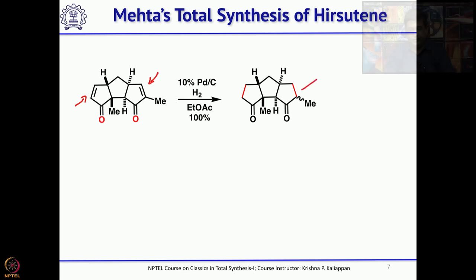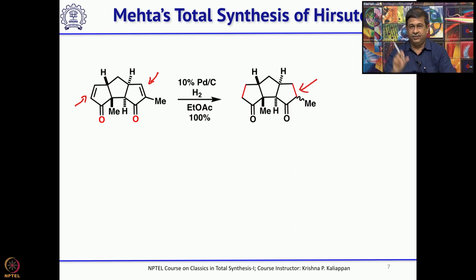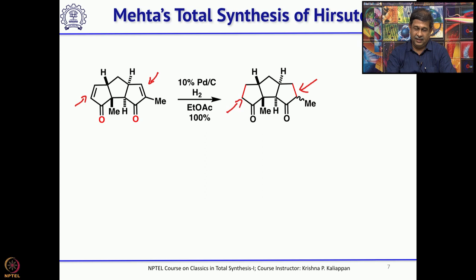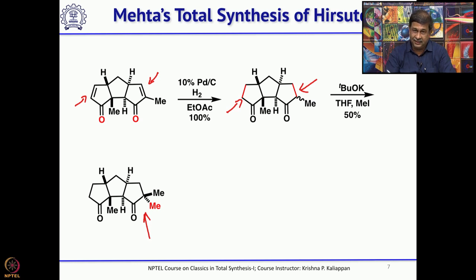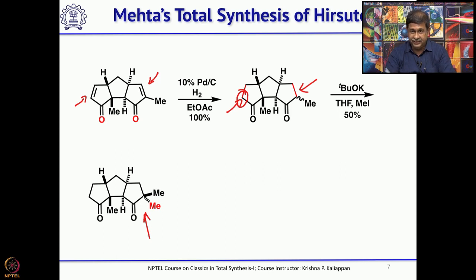Next, he wanted to introduce one more methyl group, because if you look at hirsutene, you have a gem-dimethyl group at that carbon. He treated with potassium tert-butoxide and quenched with methyl iodide. He could introduce one more methyl to get the gem-dimethyl group, but he got only 50% yield, which is understandable because one can also methylate at the other carbon. Nevertheless, 50% of the required product with the gem-dimethyl group was successfully isolated.